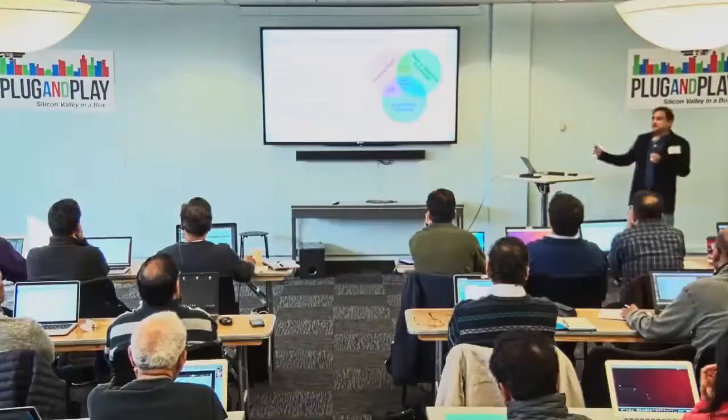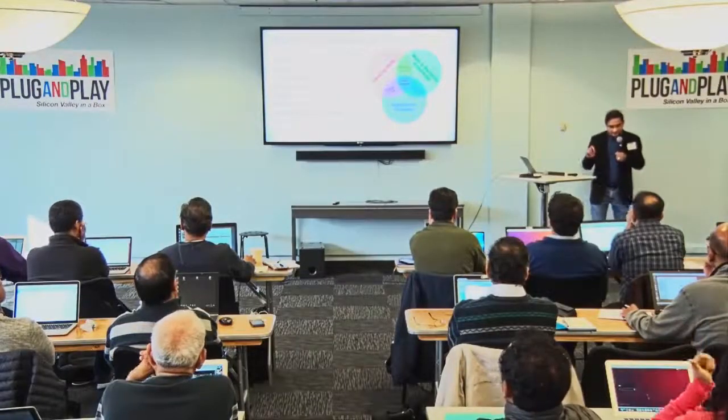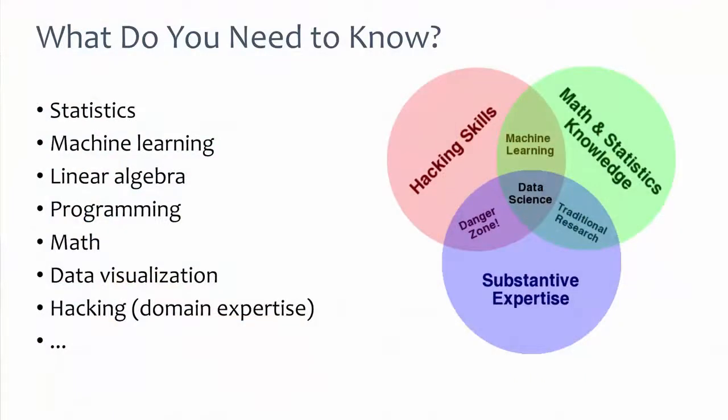So what do you need to know? There is a very interesting comment about data scientists: a data scientist must know more computer science than a statistician and more statistics than a computer scientist. It is definitely very challenging. A hardcore data scientist must know statistics, machine learning, linear algebra, programming, mathematics including discrete mathematics, data visualization, and also domain expertise. These are all the things necessary to become a very good data scientist.